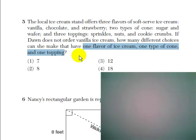So if you remember your fundamental counting principle, if we count up the number of choices that Dawn has in each category—flavor, cone, and topping—and multiply those numbers together, we'll get her total number of choices.